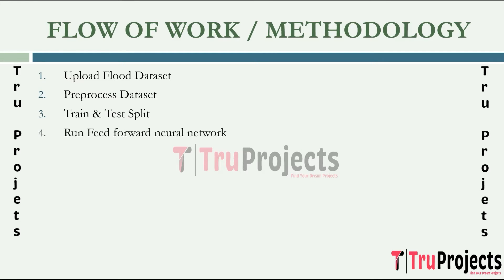The next step is running the Feed Forward Neural Network. Here we train a FFNN model, which involves initializing the network's parameters — weights and biases — and optimizing them iteratively using an optimization algorithm to minimize a loss function. The trained FFNN model learns to map input features to output predictions.